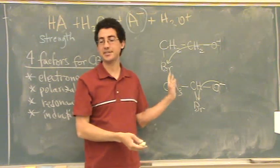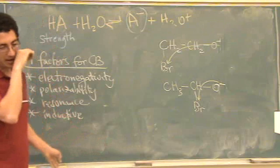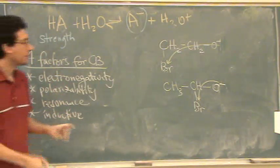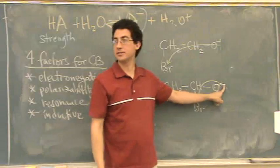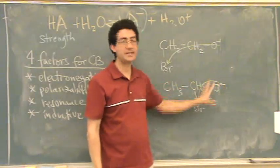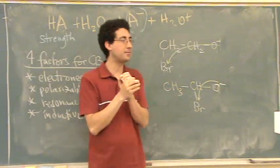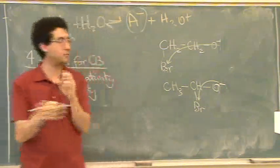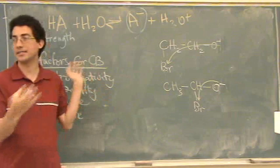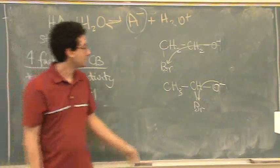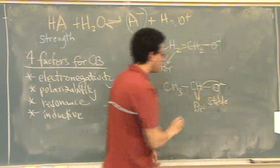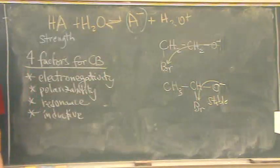So the closer a halogen is to the minus charge, the more stable this molecule will be because it spreads out that minus charge. Remember, we don't like a minus charge being in one location. We want it spread out or moved around or just like the I minus, it's a really big fat thing.